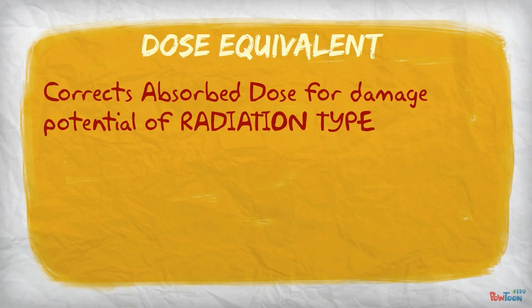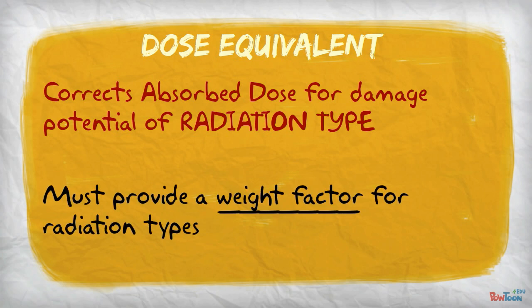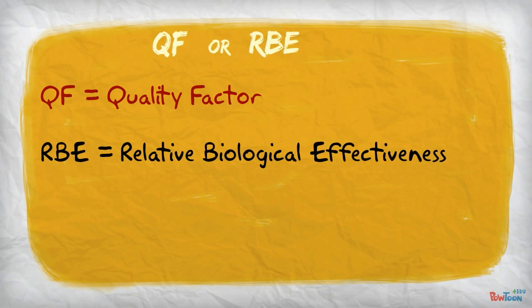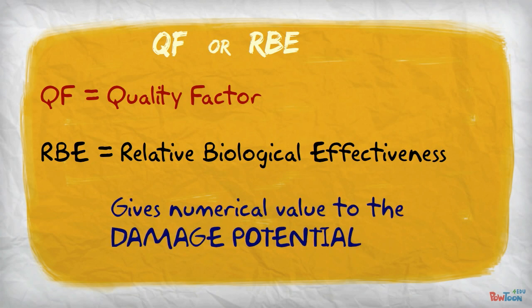The next measurement is dose equivalent. This takes the absorbed dose and corrects it for the damage potential of the radiation type we are measuring. In order to do this, we must provide a weight factor for the different types of radiation. The weight factor is QF or RBE. QF is quality factor, while RBE is relative biological effectiveness. While RBE is the newer term, many sources still use QF. They are essentially interchangeable. As mentioned, these factors give numerical values to the damage potential of the radiation type.